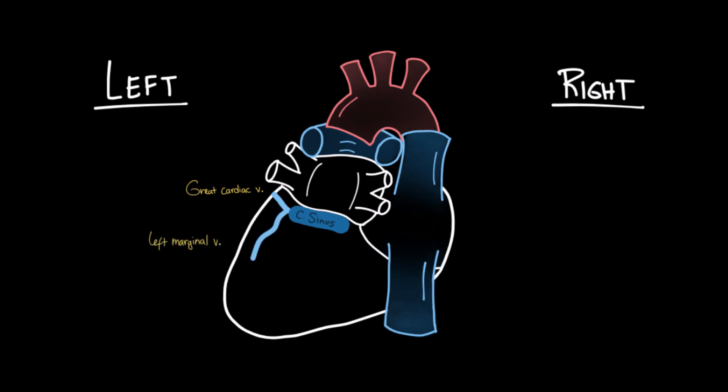Then the left marginal vein that runs with the left marginal artery and also drains into the coronary sinus. Then the left posterior ventricular vein that drains the posterior wall of the left ventricle and ends in the sinus. Then we have the oblique vein of the left atrium, also called the vein of Marshall, which is a tiny vein that descends the posterior surface of the left atrium and joins the coronary sinus.